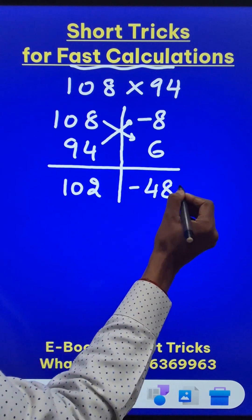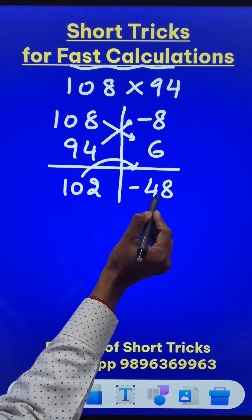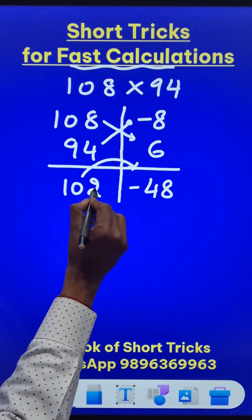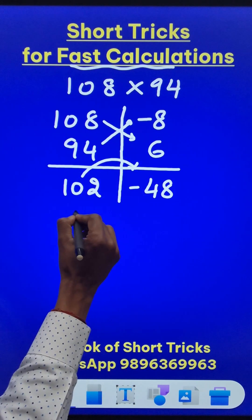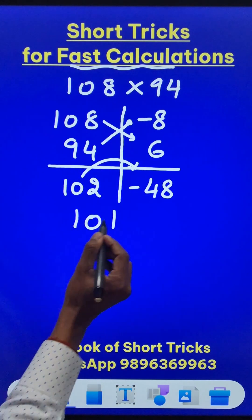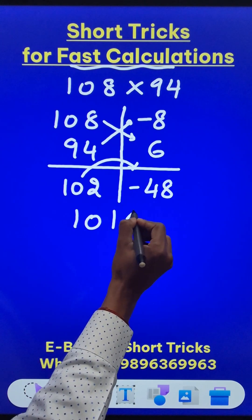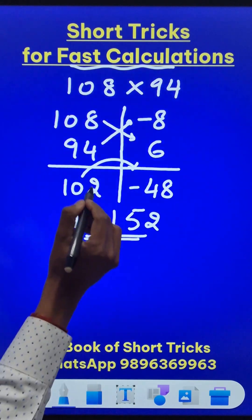Now since we have a negative number here, just borrow one from here and subtract this number from 100. So 102, since it gave away 1, this became 101. And 100 minus 48 is 52 and that gives us the product of these two numbers.